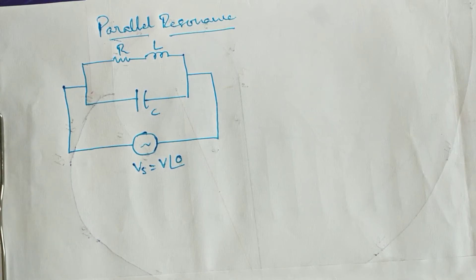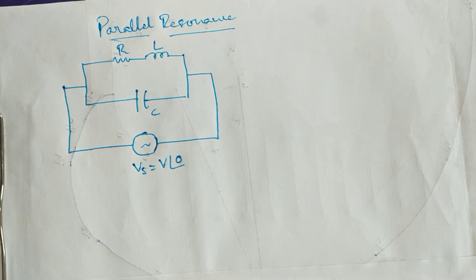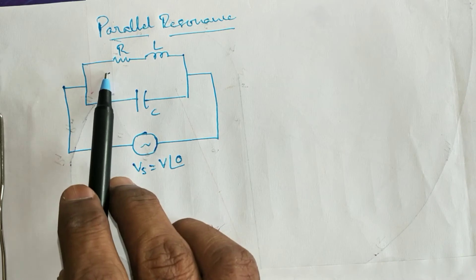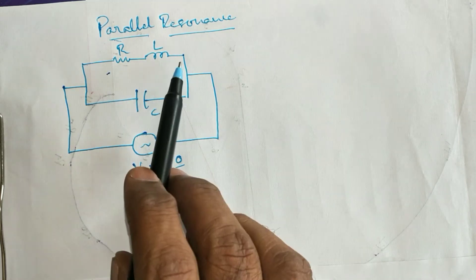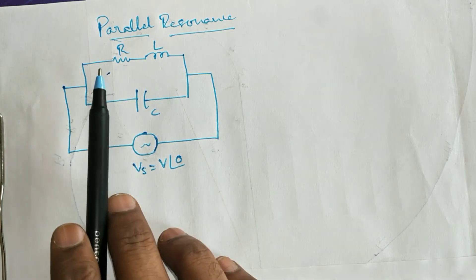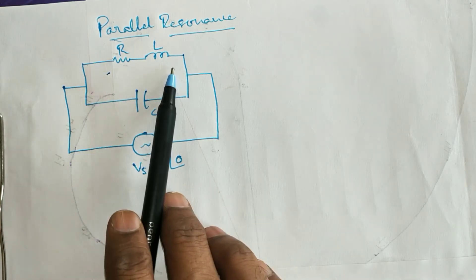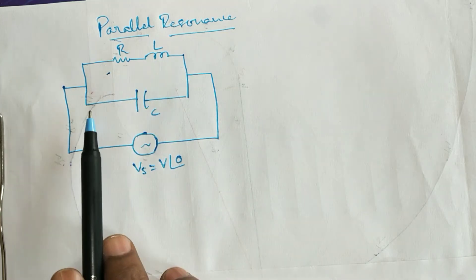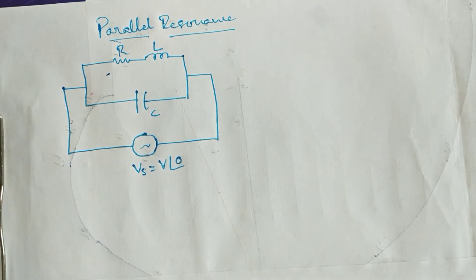Welcome to this session on electric circuits. In this session I would like to discuss parallel resonance. I am going to consider a simple parallel circuit with two branches — one branch has a series combination of resistance and inductance, and the second branch consists of a pure capacitor.